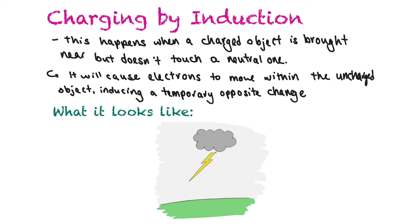Charging by induction happens when a charged object is brought near but doesn't touch a neutral object, causing an induced charge separation. The charged object causes electrons to move within the uncharged object, inducing a temporary opposite charge. For example, if a cloud has positive charges at the bottom, it induces a negative charge on the ground below. This temporary opposite charge induced by repelling electrons within the neutral object is charging by induction.